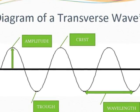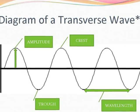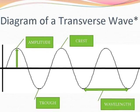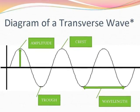The wavelength, as indicated by the green arrow, is the distance from one trough to the next one, or one crest to the next one.